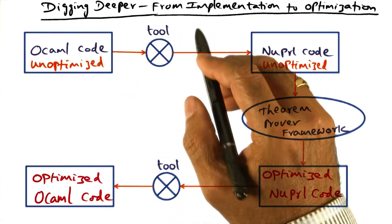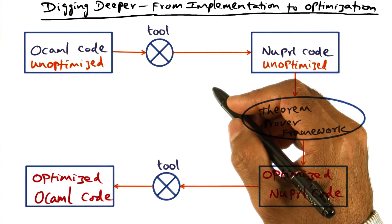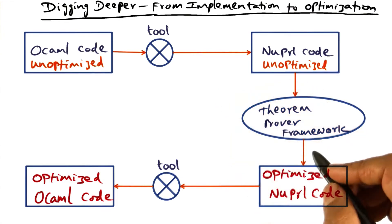As I mentioned earlier, for going from implementation to optimization, we once again turn to the theoretical framework. And in this case, we're going to use this new PERL theorem proving framework.